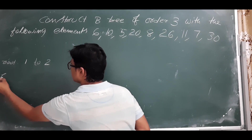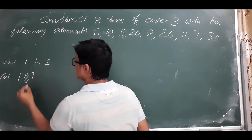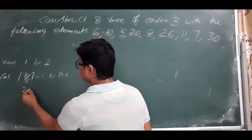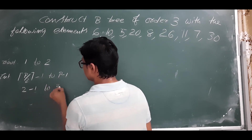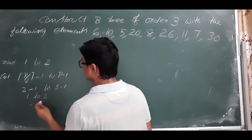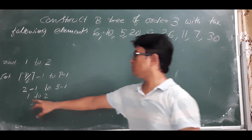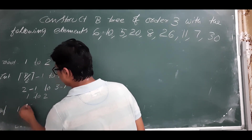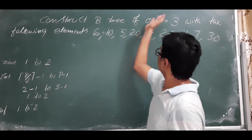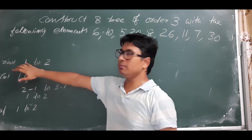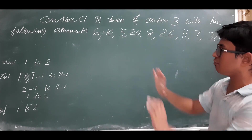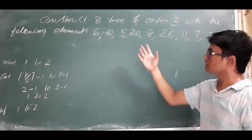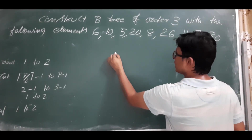For internal nodes, the range is ceiling of p/2 minus one to p minus one keys. So that is ceiling of 3/2 minus one to 3 minus one, which equals one to two keys. The leaf node also has the same: minimum one and maximum two keys. So for order three, all nodes have minimum one key and maximum two keys. Now we will start constructing the B-tree.